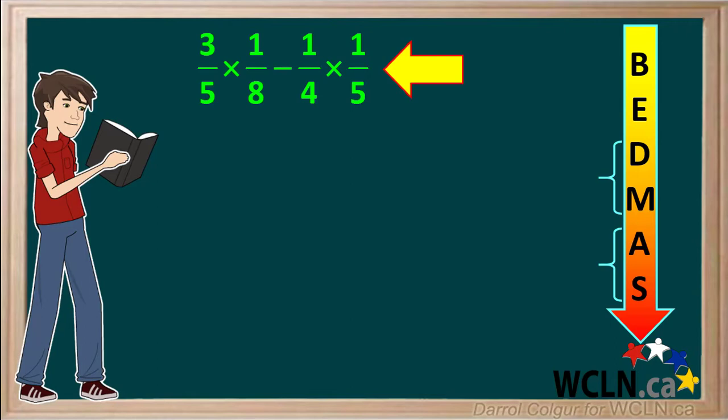Here's another example, three-fifths times one-eighth minus one-quarter times one-fifth. At the top of BEDMAS is B for brackets. We see there are no brackets in this question, so we can skip brackets and go on to the next operation. Also, we see there's no exponents in this question, so we can skip exponents and go on to the next operations, which are division and multiplication.